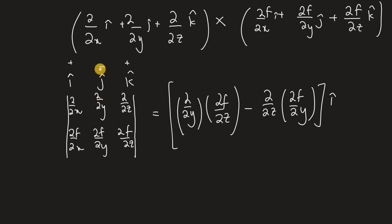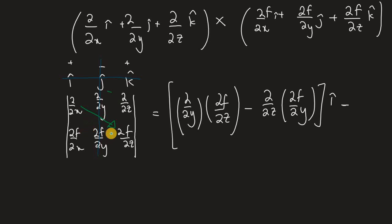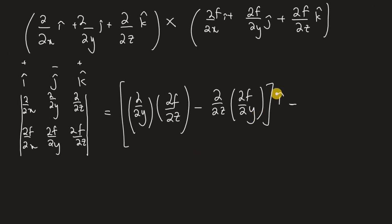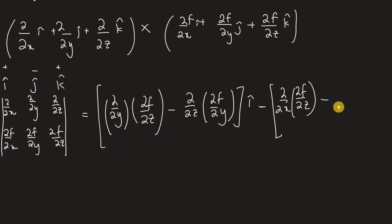Next is the j-hat component, and remember j-hat is negative. We cross out the j column and its row, then cross-multiply: (∂/∂x)(∂f/∂z) minus (∂/∂z)(∂f/∂x). So we put a negative in front of this whole expression for j-hat.